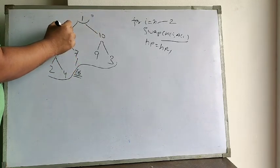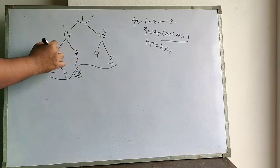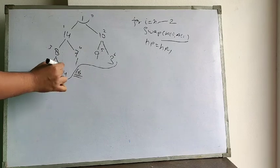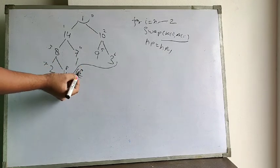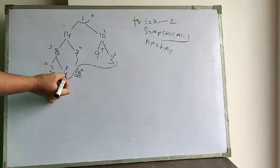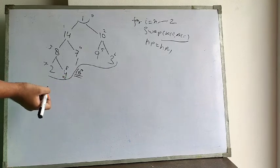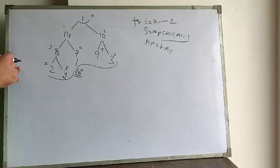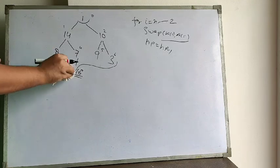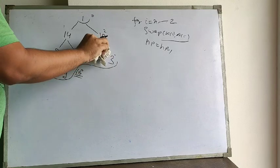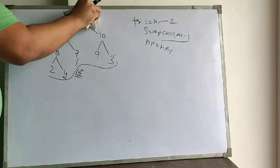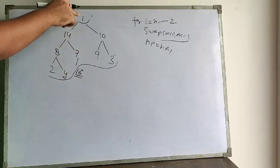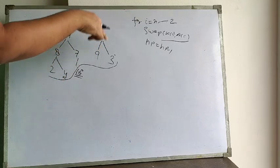When we reduce the heap size by 1, the indices of the heap were 0, 1, 2, 3, 4, 5, 6, 7, 8, and 9. After extracting the 9th index element, the next heap boundary will be index 8. This element will be used as the new last heap element.